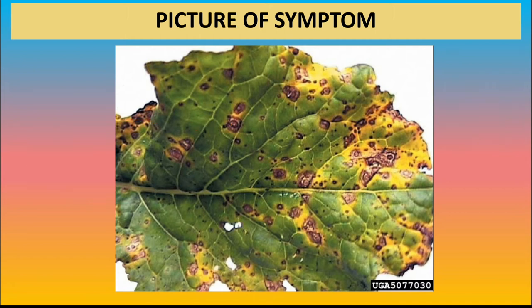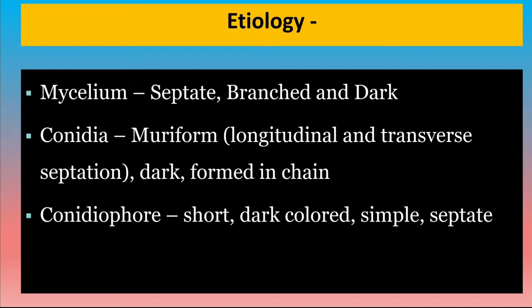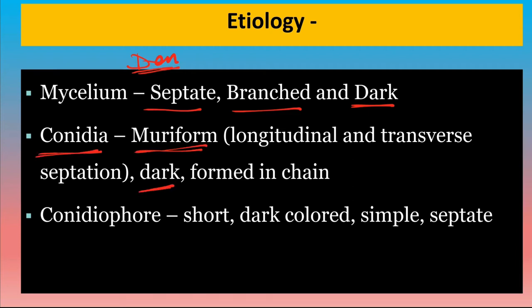Etiology: The fungus belongs to subdivision Deuteromycotina. It has septate, branched and dark mycelium. It produces asexual spores called conidia which are muriform and dark in color, and these conidia are formed in chains.